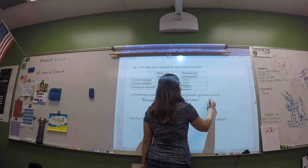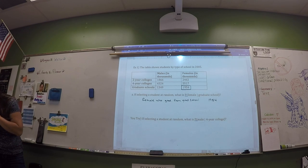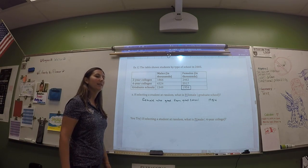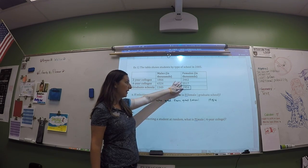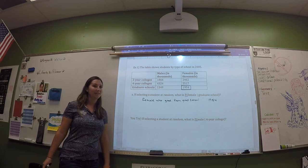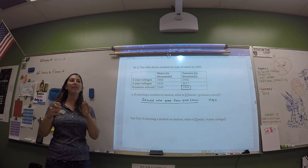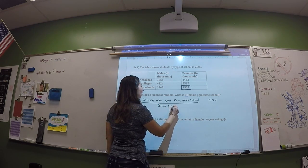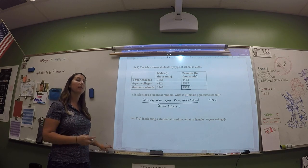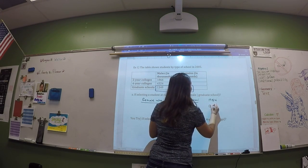Bottom right — that's the females and grad school cell. This source is the US Census Bureau. So females who graduated from grad school is our numerator, and then we're going to divide that by the given that — the total number of people who graduated from grad school that year. How do we find that? Add the males and females that graduated from grad school together — so 1,349 and 1,954.